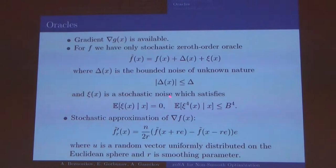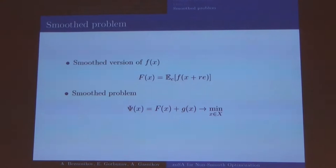For function g we have oracle with gradient, for function f we don't have oracle with gradient, but have only zero order oracle with stochastic noise xi and systematic noise delta. And we know that delta is bounded by constant delta and for xi we know that its fourth moment is bounded by constant B. And for our problem we used stochastic approximation of gradient f, something like this. And vector e here is a random vector from uniform distribution from the Euclidean sphere.